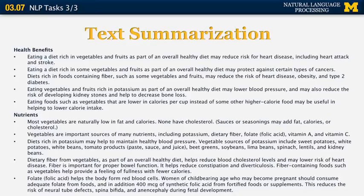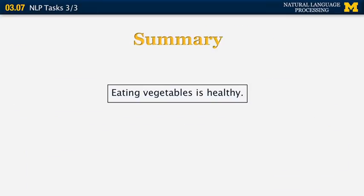In multi-document summarization, you have as input a series of connected documents — for example, different news stories on the same event. The summary should contain all the information that appears in all of them as consensus, but also focus on differences between the input documents. The example shown is from a single document summarization system — the output is something you would want to see but doesn't yet exist in current systems. The input discusses health benefits of a diet rich in vegetables, and the ideal summary would be simply 'Eating vegetables is healthy.'